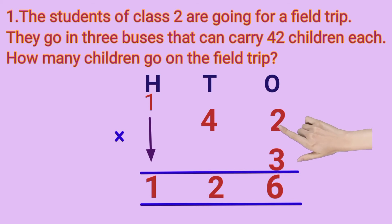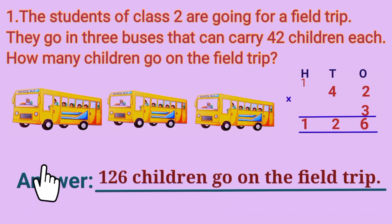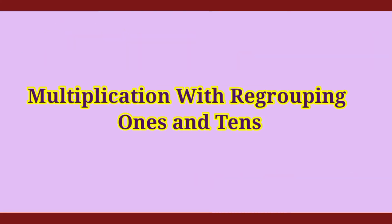So we get the answer: 42 multiplied by 3 is equal to 126. The answer is 126 children go on the field trip. Are you clear, children? Next topic is multiplication with regrouping ones and tens.